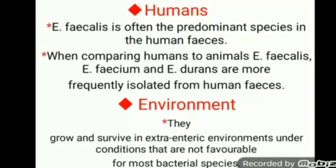In the third category of primary sources — environment — Enterococci have the ability to grow in unfavorable conditions and can therefore be said to be present everywhere in the environment. They are present in sewage water, surface water, animal feed, and fertilizers. Pathogenic species of Enterococcus present in these environments may also cause many diseases.